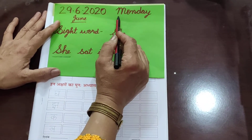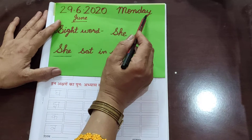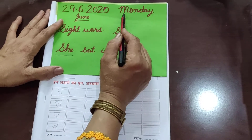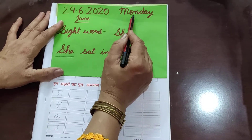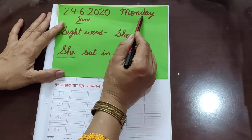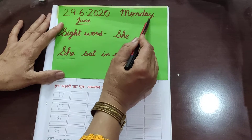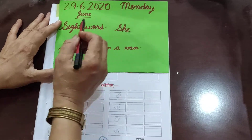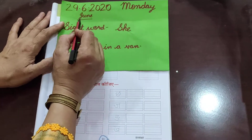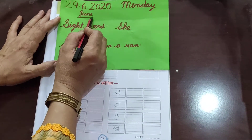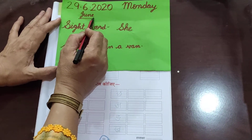All of you repeat: Today is Monday. Speak out M-O-N-D-A-Y, Monday. Very good. And month is J-U-N-E, June.